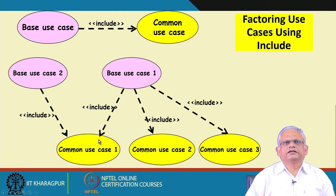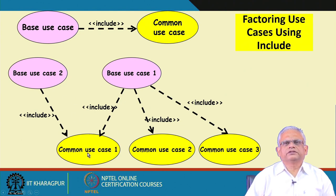The include relation helps identify common functionality. The base use case compulsorily includes certain use cases, while base use case two includes only one of them. Some factored use cases may be included by other use cases or may not be included elsewhere — that does not matter. The key benefit is that the common functionality is elaborated only once and serves both base use cases.